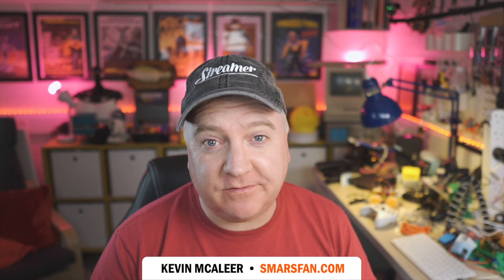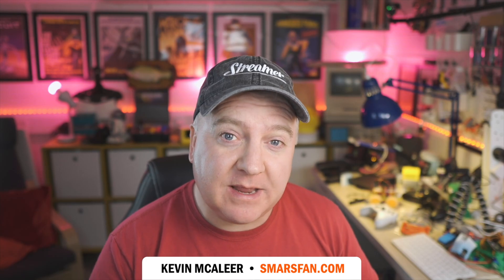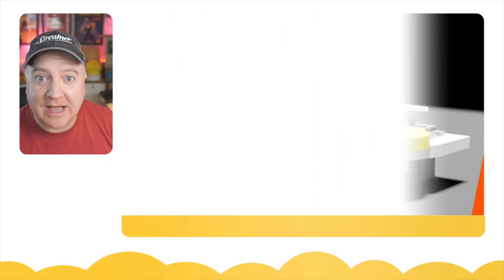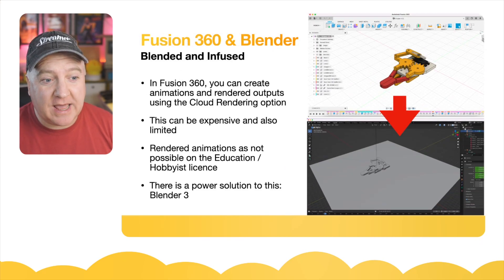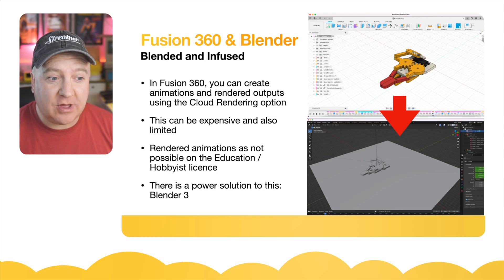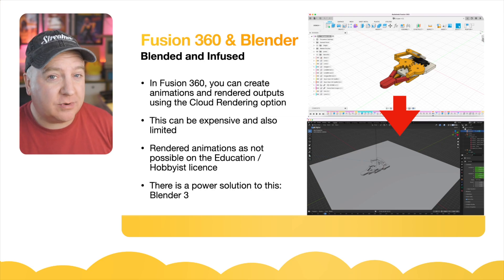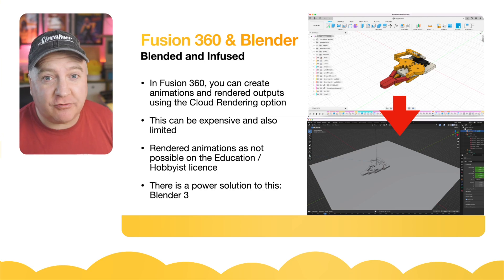Hey robot makers, do you want to know how to take a model that you've created in Fusion 360 and render that in Blender to make it look really nice? Then keep watching. In Fusion you can create a model and export it as an OBJ file, then bring that into Blender and render it out using the full power of Blender.